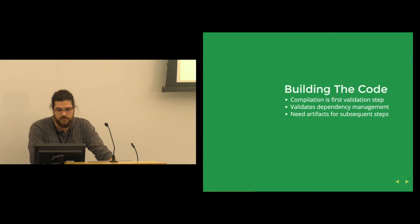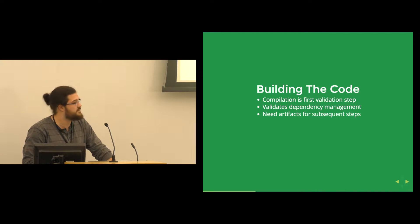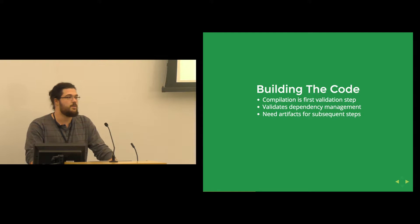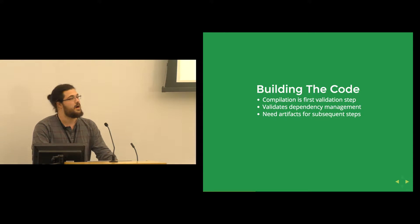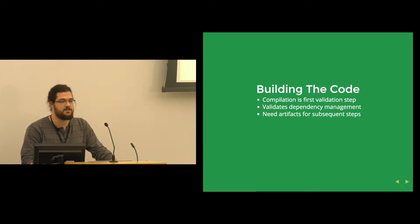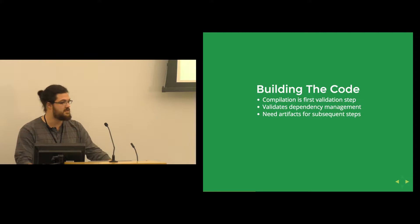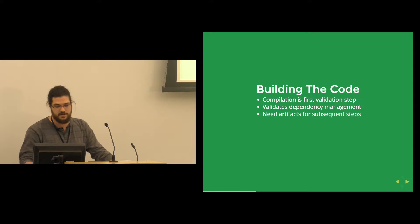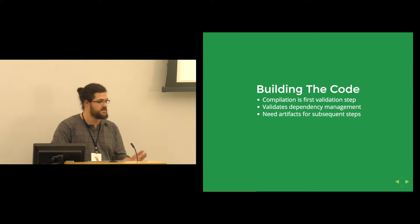The first thing we're going to do is build our code. This is the first step of validating that our code is correct — if we can't get past compilation, we can't get very far. This is the first thing we need to do to know that we have a working application. It also validates our dependency management, so if there are external or first-party libraries we need to pull in, we want to make sure all those pieces hang together appropriately and that we can produce an executable. We'll need those artifacts and that built code for running tests in the rest of the build pipeline.